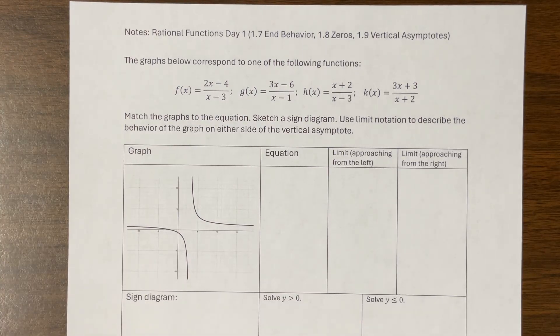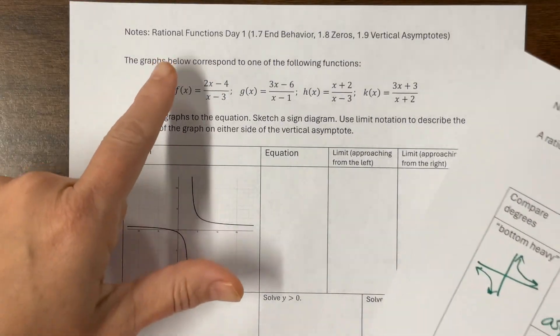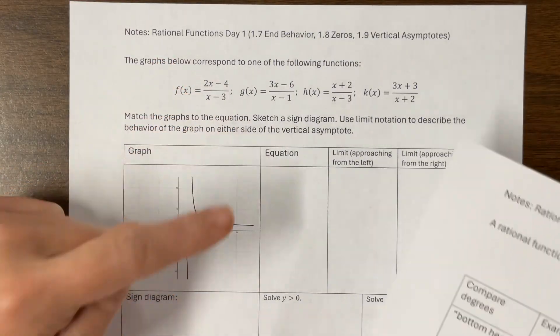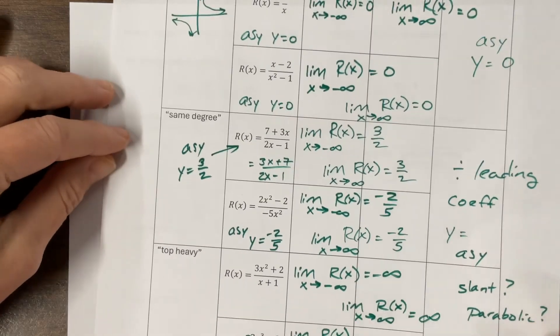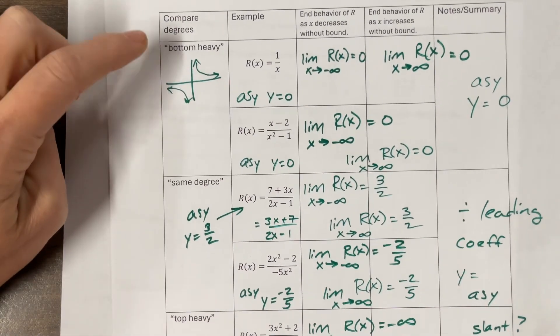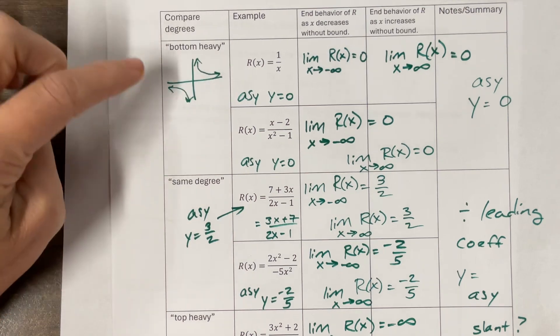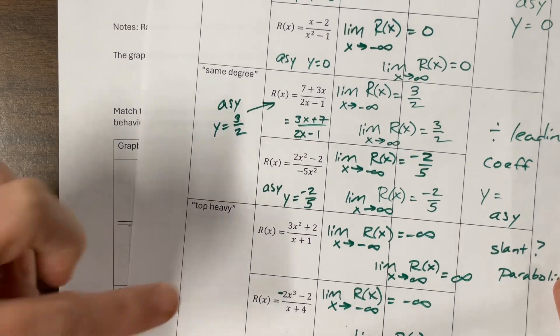Howdy, April. It is Ms. Koch. This is the second part of my rational functions — I'm calling it rational functions day one. We were looking at end behavior limits based on whether our function had a larger degree in the bottom, the same degree top and bottom, or a larger degree at the top. There was different cool stuff happening, so go back and watch that video.